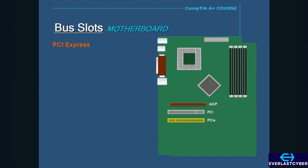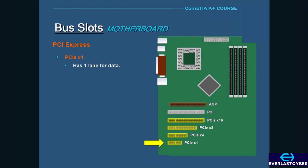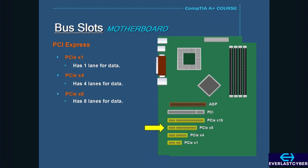There are 4 different slot sizes in PCI Express: PCI Express x1, x4, x8, and x16. PCI Express x1 has 1 lane for data. A lane has 4 wires — 2 for sending and 2 for receiving. PCI Express x4 has 4 lanes, x8 has 8 lanes, and the fastest slot, PCI Express x16, has 16 lanes.